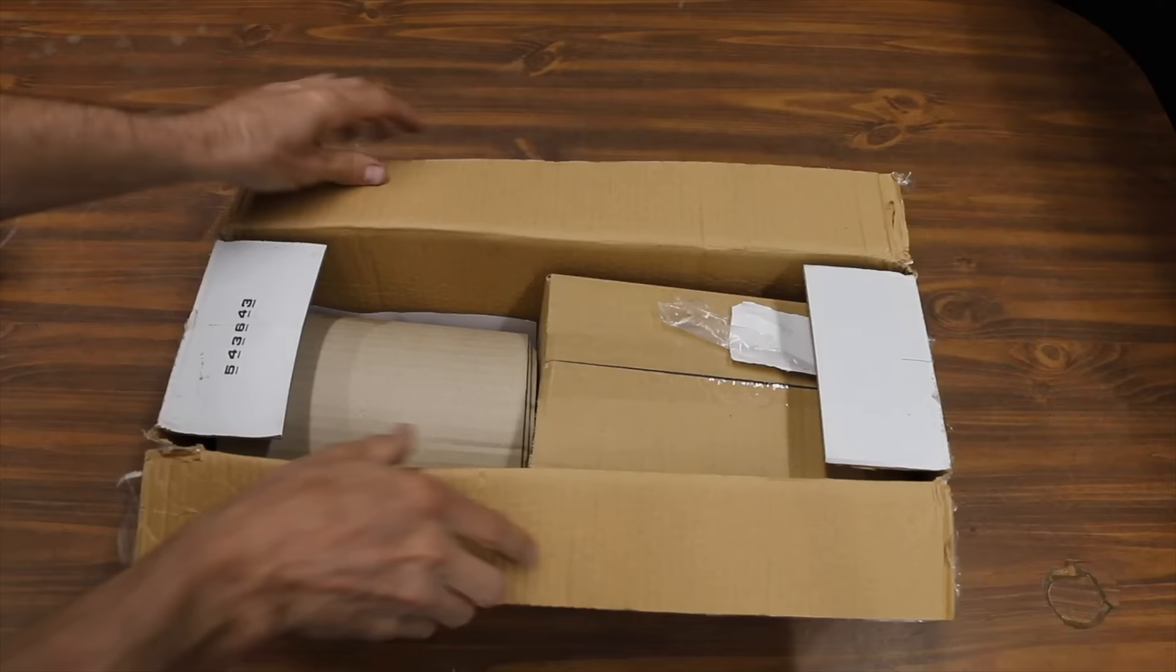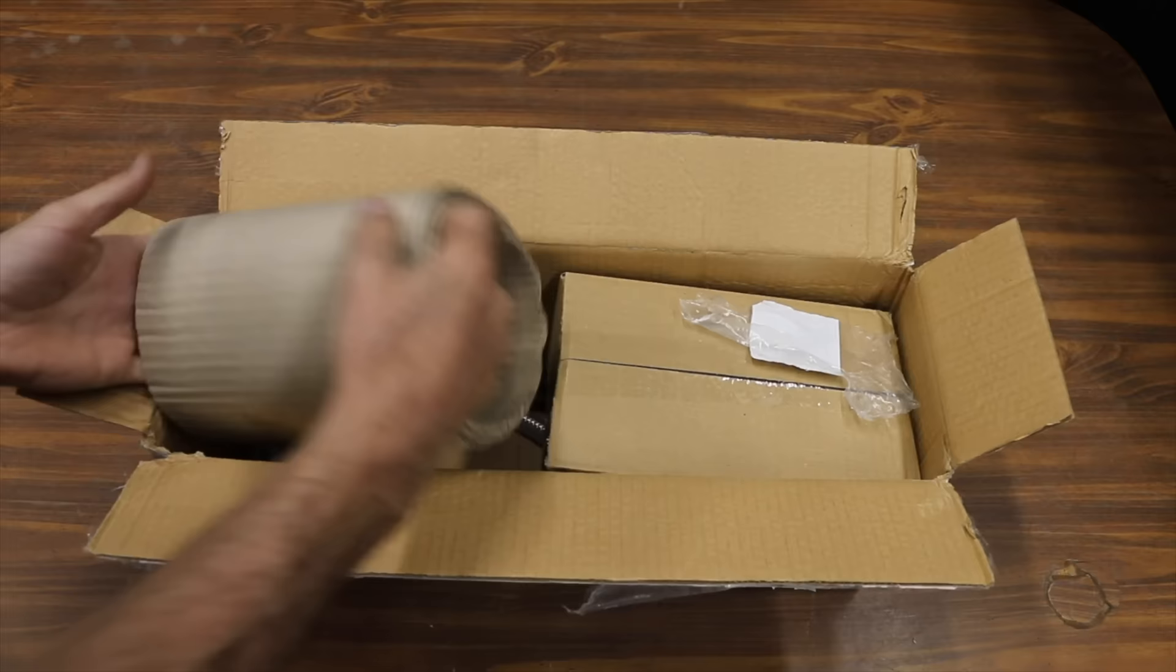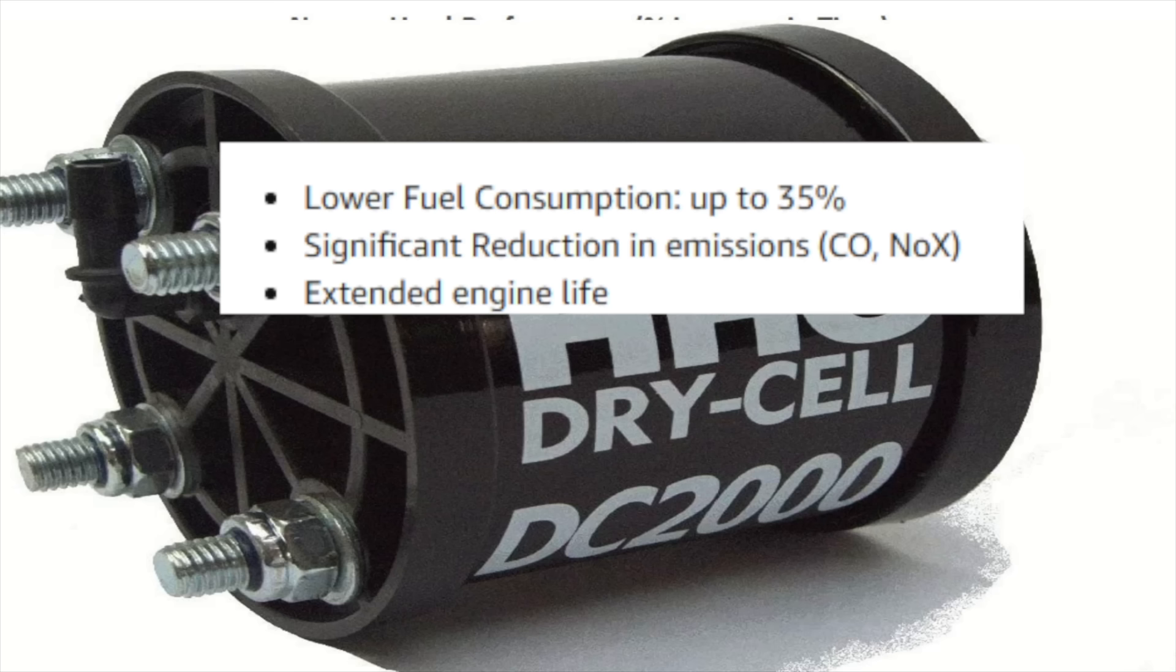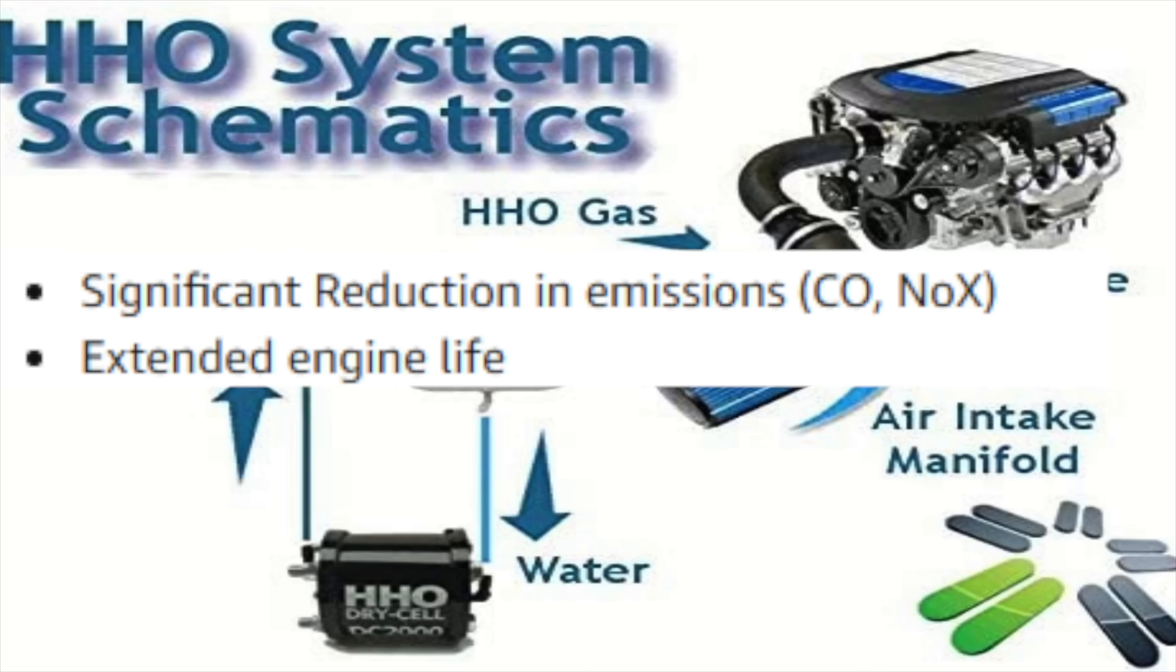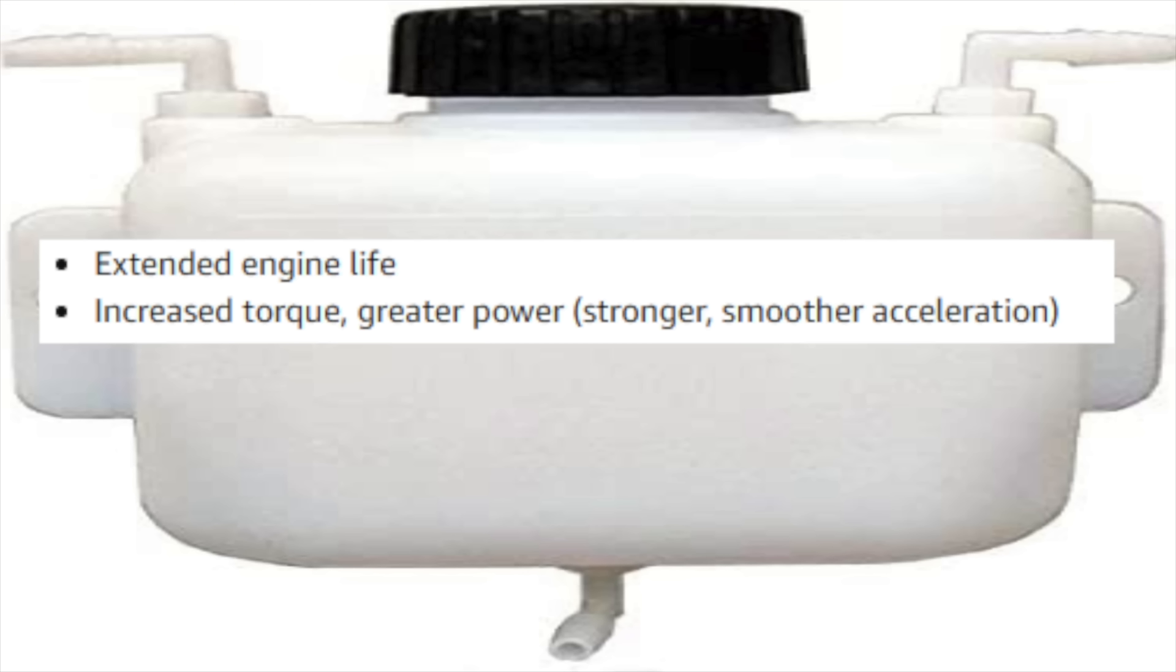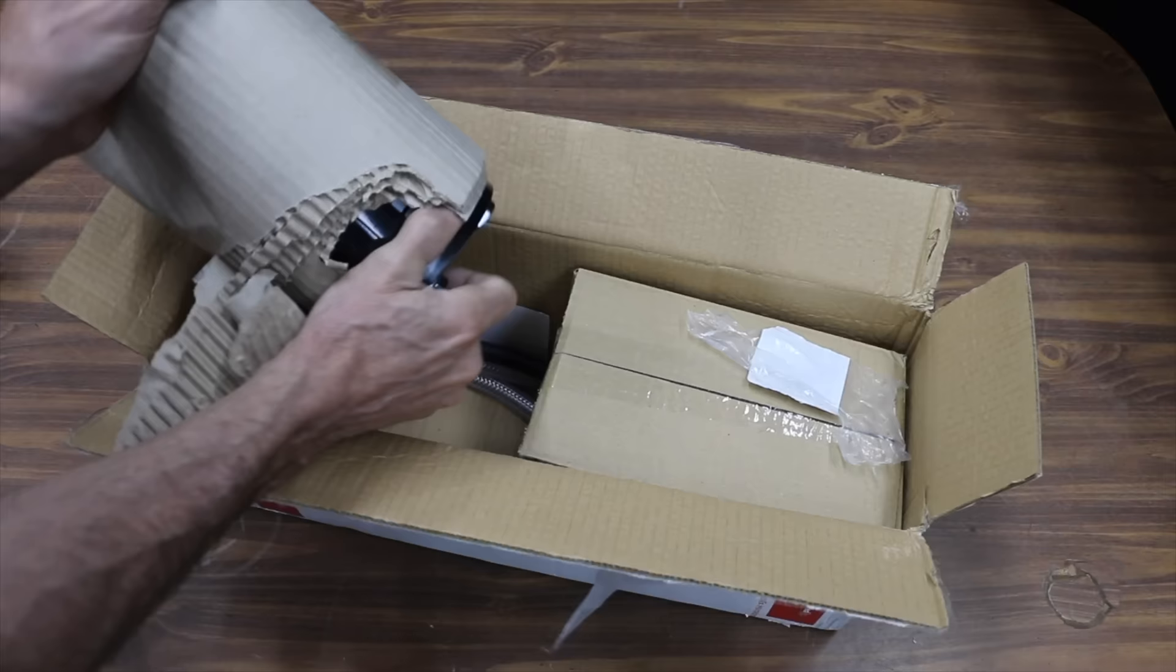The next product to make the worst 10 product list is this HHO or Oxyhydrogen generator. The manufacturer claims that you can reduce fuel consumption by up to 35 percent. It also claims to reduce emissions and extend engine life. It even claims to increase engine torque and improve acceleration. You can have all this capability for around $200.